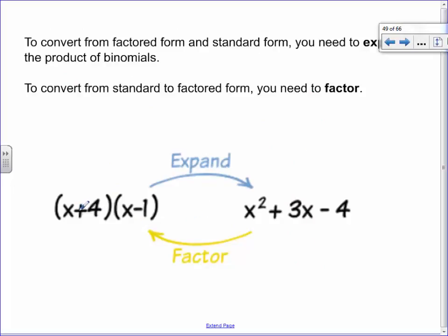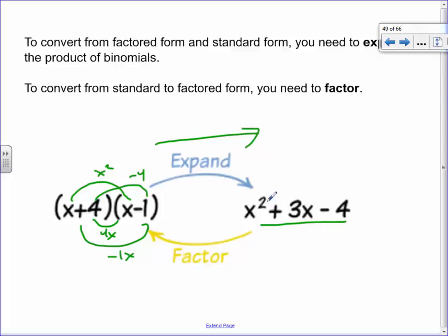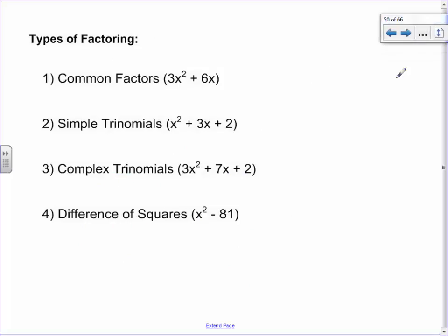You guys should know how to expand. If I go x times x, x times minus 1, minus 4, minus 1x — so far you've been going this direction. My job for the next couple of weeks is to make sure you're great going backwards. I like to break things up into four different types of factoring: the common factor, the simple trinomial, the complex trinomial, and the difference of squares.